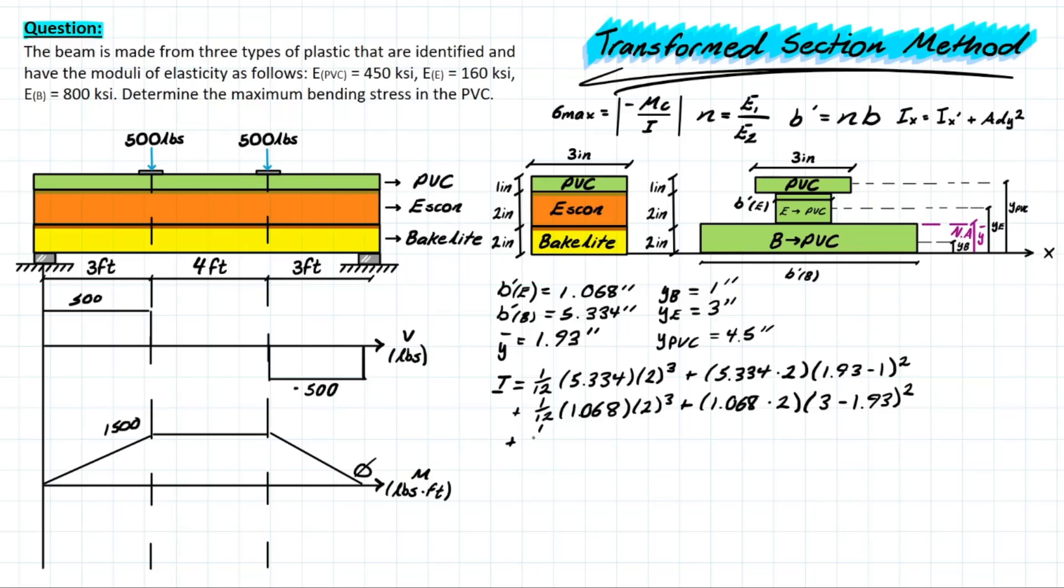And we do the same for the PVC, which is 3, the original width, which is unchanged. That's to the power of 3. We do the area, and we do the difference in distance once again. So we have 4.5 subtracting 1.93 squared, leaving us with a final number of a very nice 36 inches to the power of 4.